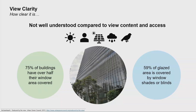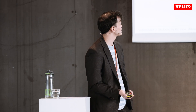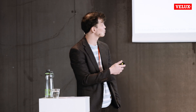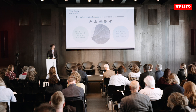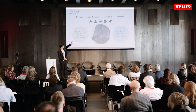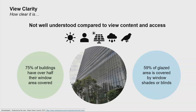View clarity describes how clear the view appears after shading and any obstructions. Compared to view content and view access, view clarity isn't as well understood. Primarily when we think about shading, we use it for solar protection to minimize glare and overheating. We may also design shades for visual privacy, renewable energy generation, and rainfall and environmental protection.